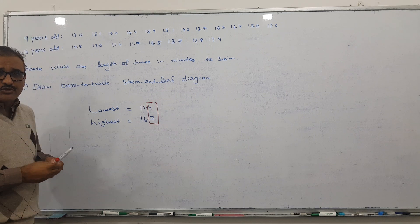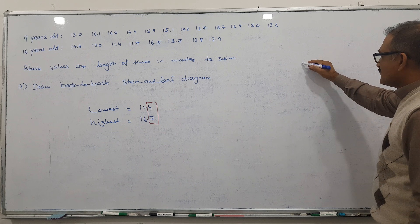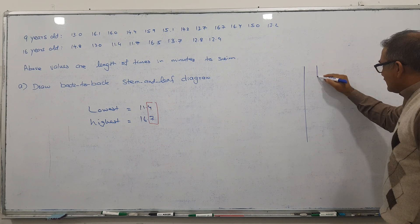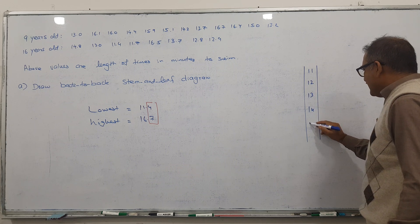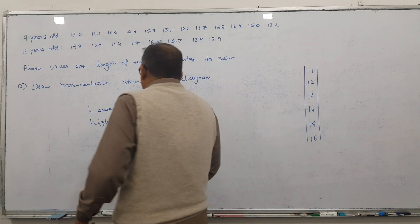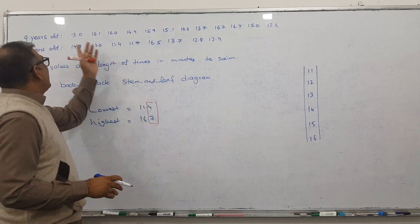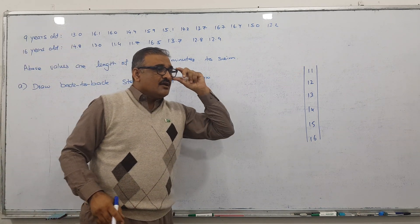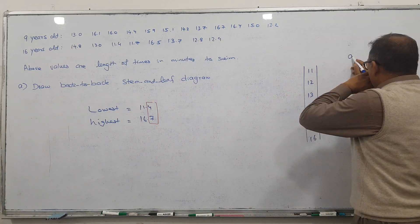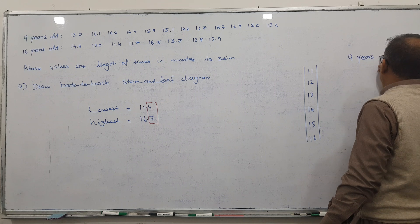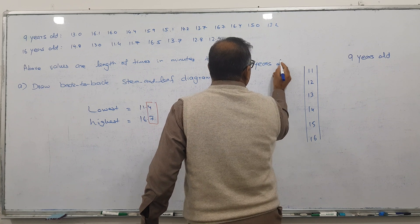I will set up the stems from 11 to 16, making stems: 11, 12, 13, 14, 15, and 16. Sometimes it's given, but since it's not mentioned here, it's our own wish. So I'll put 9-years-old on the right-hand side and 16-years-old on the left-hand side.